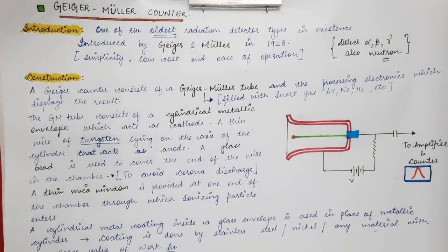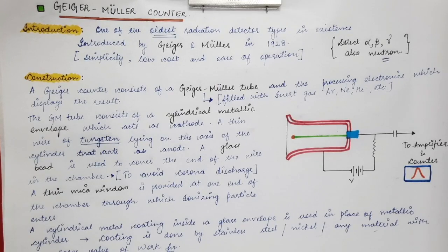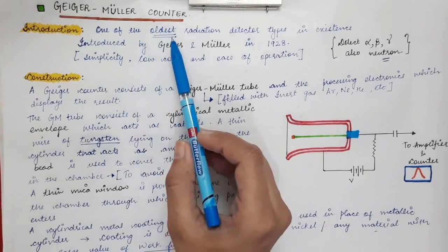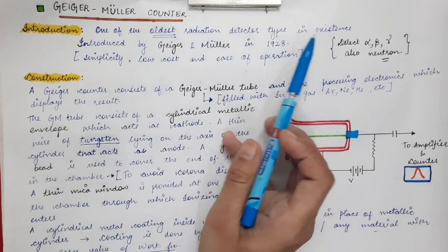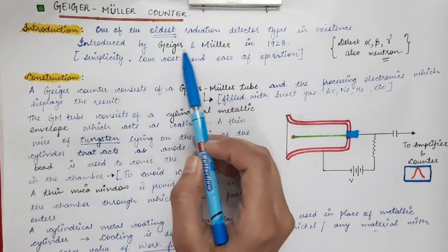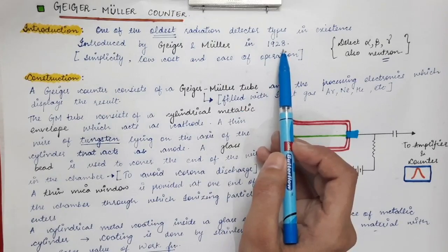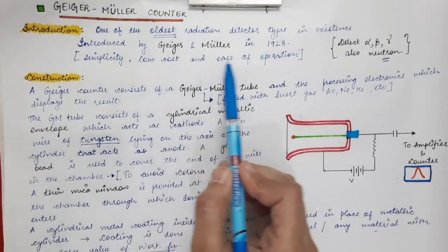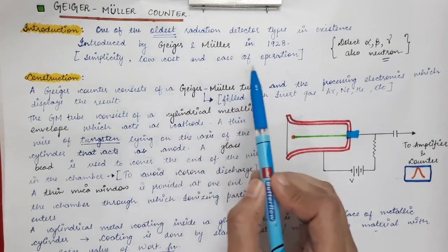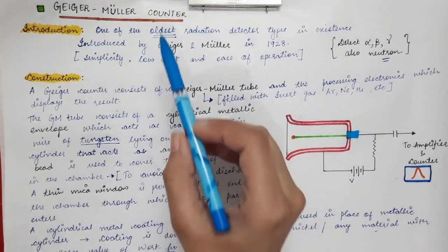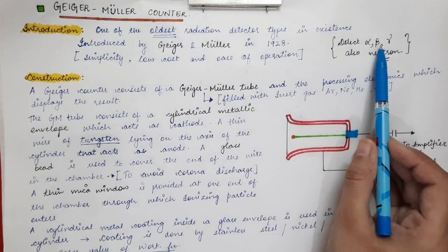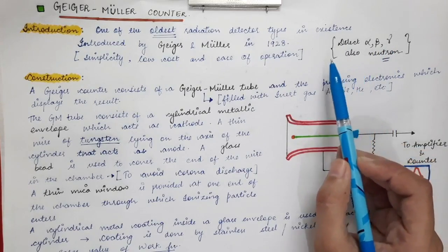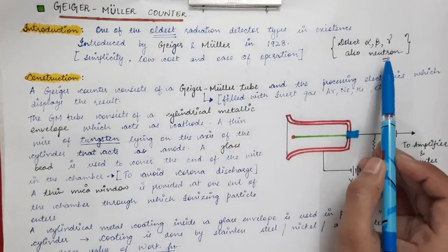In this lecture we are going to discuss the Geiger-Mueller counter, also termed as GM counter. This is one of the oldest radiation detector types in existence, introduced by Geiger and Mueller in 1928. Because of its simplicity, low cost of manufacture, and ease of operation, this counter is still used till date. It is used to detect alpha particles, beta particles, gamma radiations, and with certain modifications, neutron radiations.